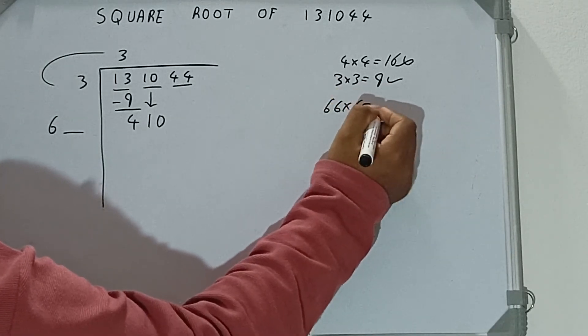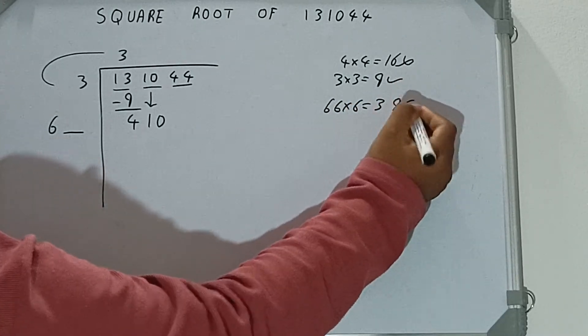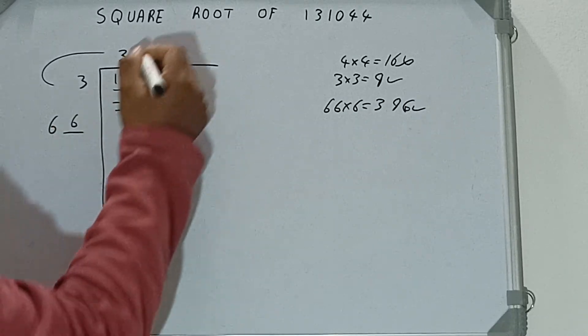If we try 6, that is 66. 6 into 6, if we try we will be getting 396, which is good to take. So 6 here and 6 here.